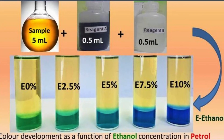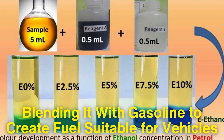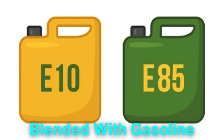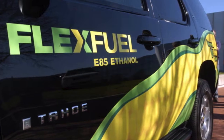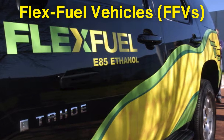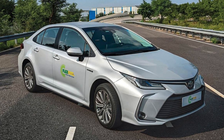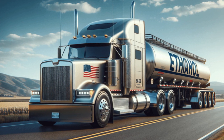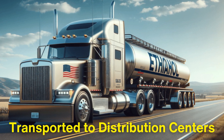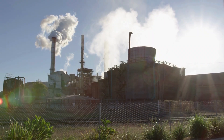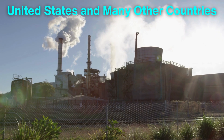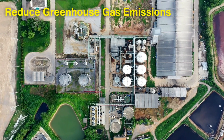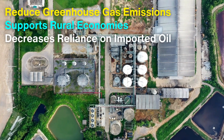The final step in ethanol fuel production is blending it with gasoline to create fuel suitable for vehicles. Most ethanol produced is blended at different concentrations, such as E10 or E85, depending on the intended use. Ethanol-blended fuels can be used in flex-fuel vehicles or in regular gasoline vehicles with lower ethanol blends. After blending, the ethanol fuel is transported to distribution centers and then delivered to gas stations. Ethanol fuel is widely available across the United States and many other countries, helping to reduce greenhouse gas emissions, support rural economies, and decrease reliance on imported oil.